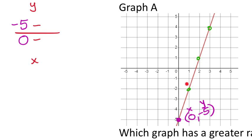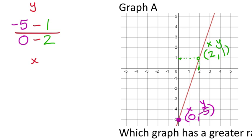I'm going to use a specific point on purpose so you'll see it doesn't matter which ordered pair we use on a straight line. I see its x-value is 2 and the corresponding y-value is 1. So my ordered pair is (2, 1): x is 2, which goes on the bottom of the slope formula, and y is 1, which goes on the top.